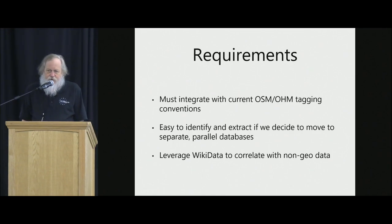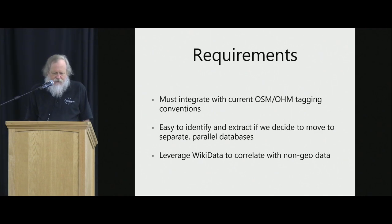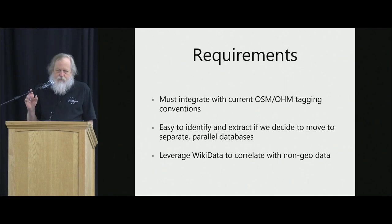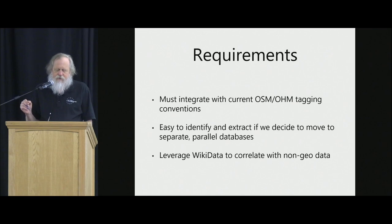It must integrate with current OSM and Open Historic Map tagging conventions. It must be easy to identify in case we need to extract it and move it. And we want to leverage Wikidata to correlate with non-geo data. I say this from experience — I played with using relations to represent complex historical structures and it was a loser. We're not doing that.